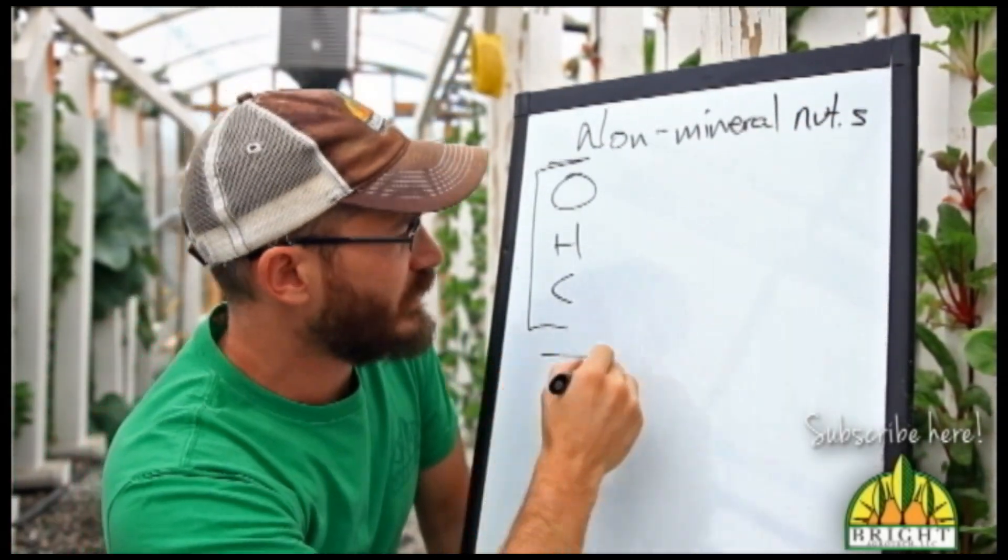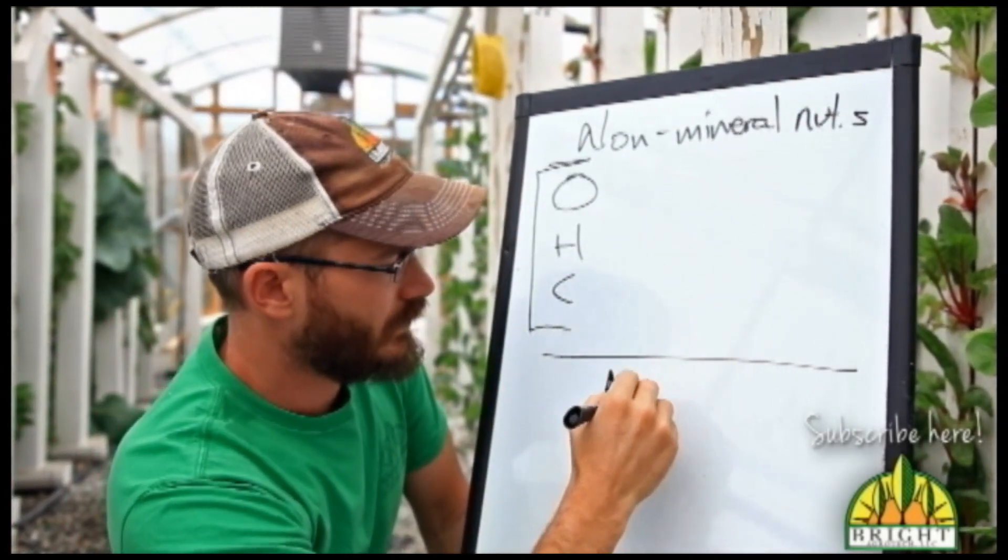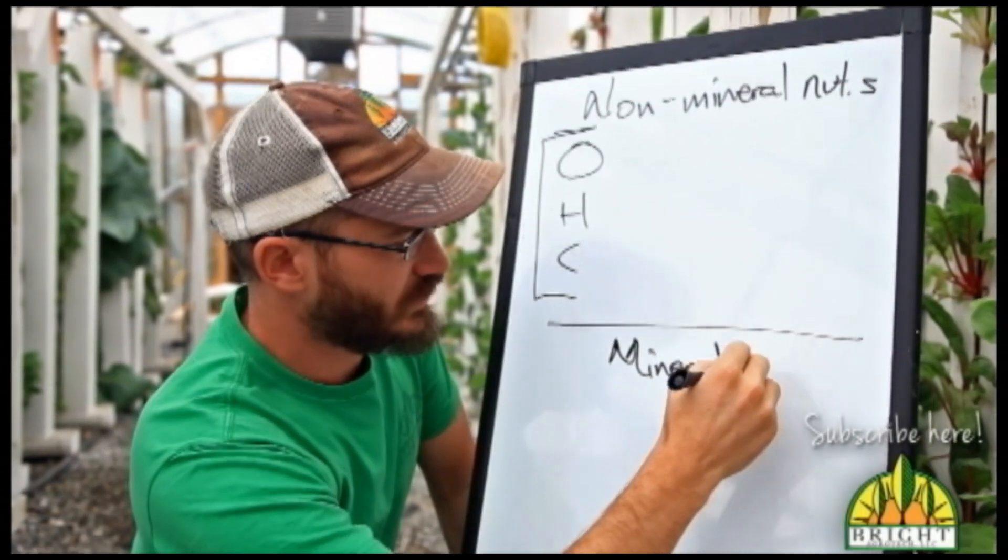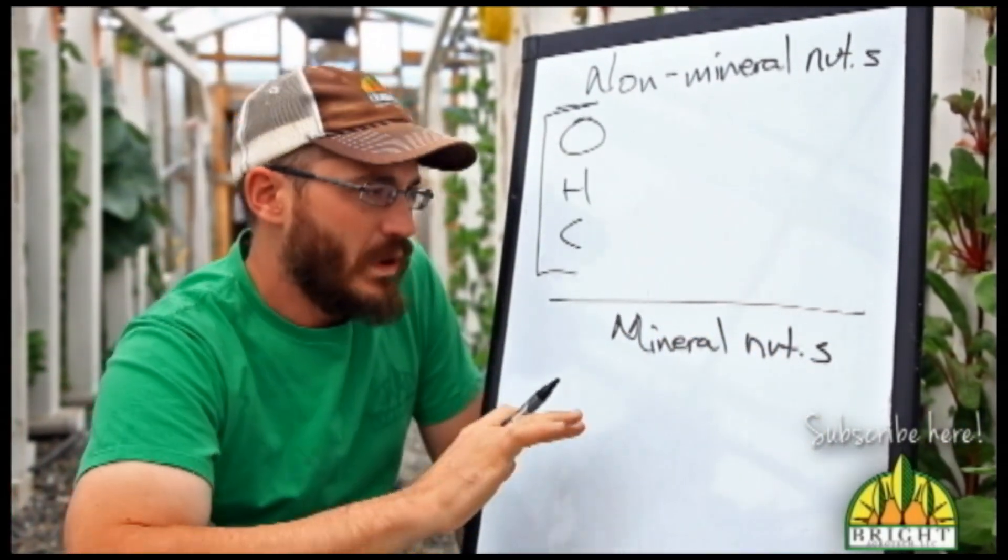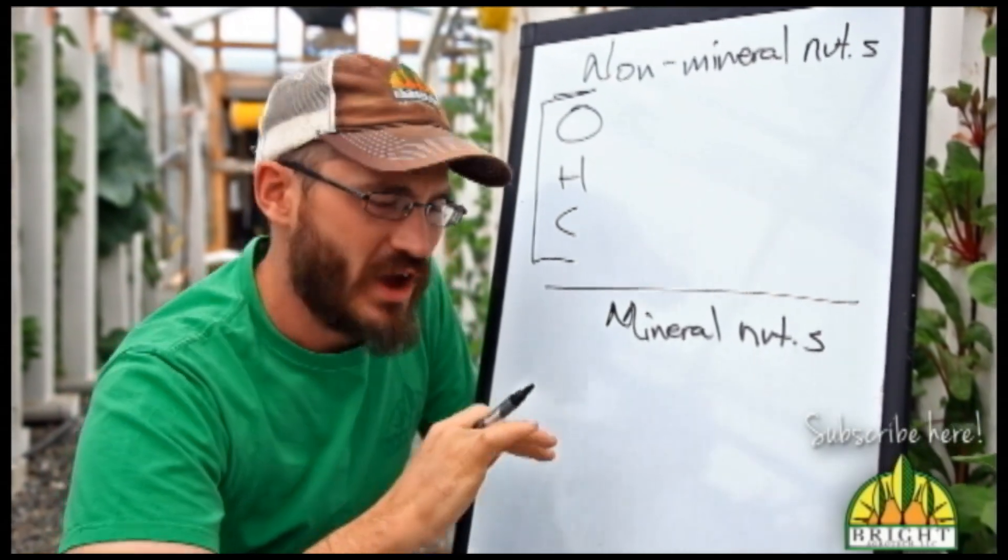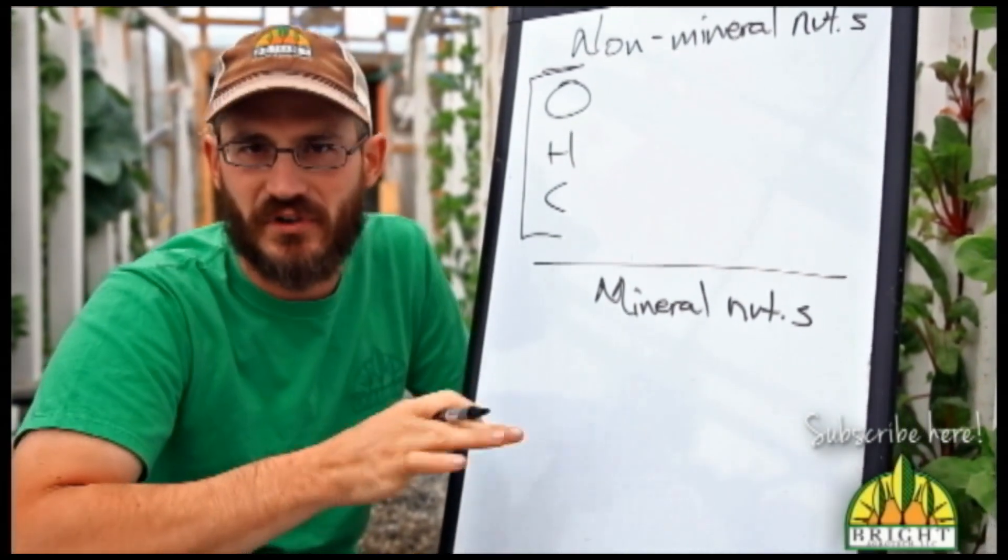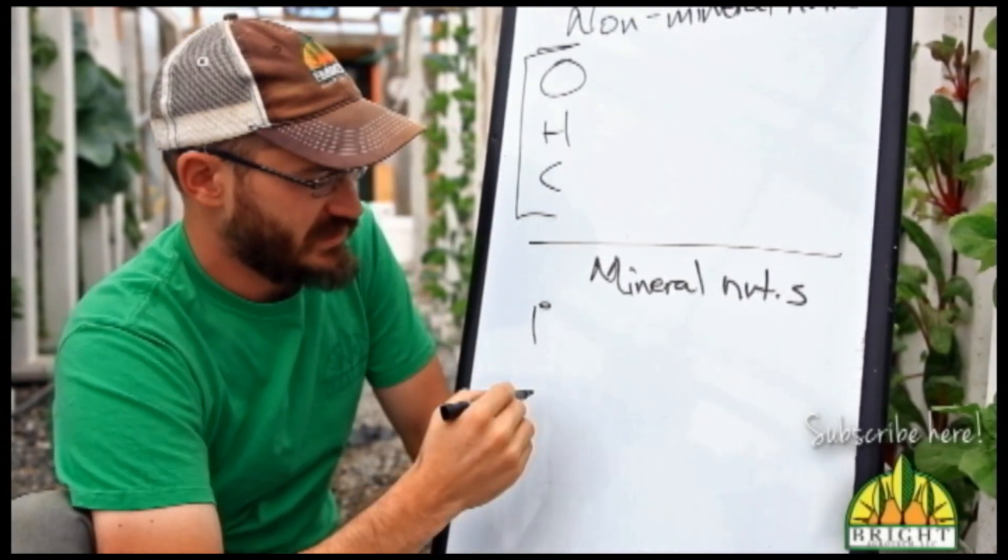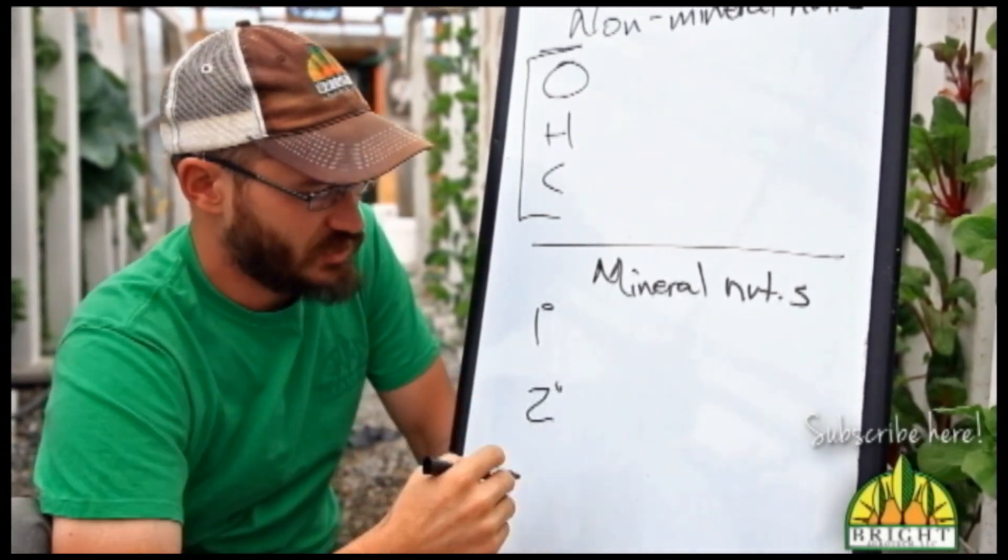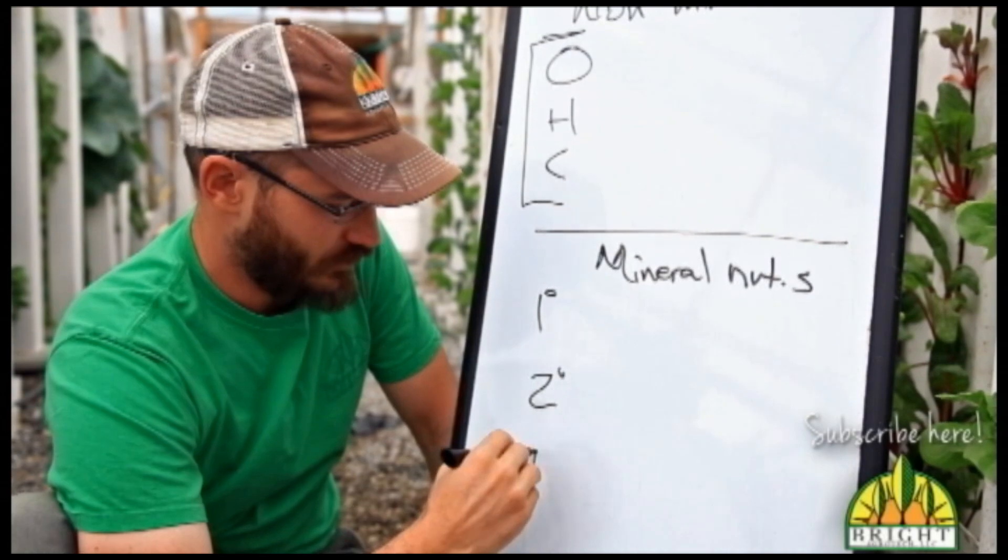The rest of our nutrients are mineral nutrients. Now, when we talk about mineral nutrients, we're talking about several different categories. We have primary nutrients, we have secondary plant nutrients, and then we have micronutrients.